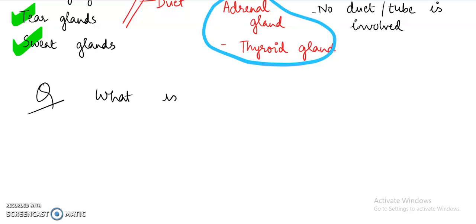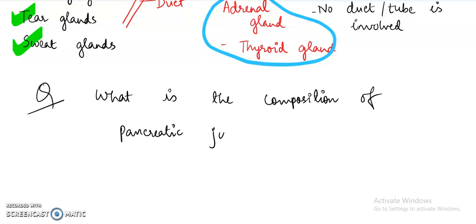Now you need to tell me: what is the composition of pancreatic juice? What is the liquid produced by the pancreas containing — which enzymes are present in it? When I talk about pancreatic juice, I am talking about its exocrine part. You can write your answers in the comment section; you will definitely get a reply, and a shout-out of your name will be given in upcoming videos.